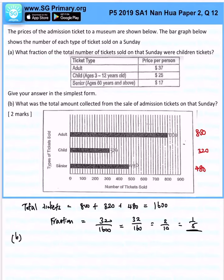What was the total amount collected? Very simple. Total amount collected, we already know the individual ticket prices, right? So it will be 800 times $37 plus 320 times $25 plus...